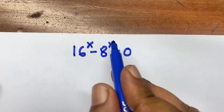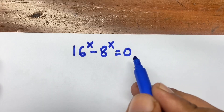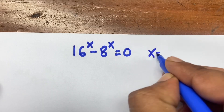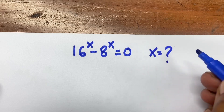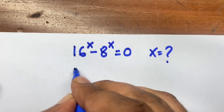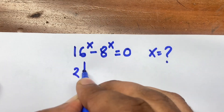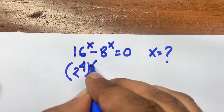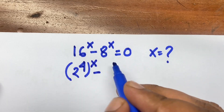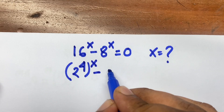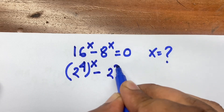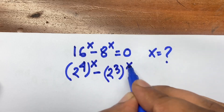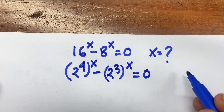How to solve 16 power x minus 8 power x equal to 0? Find x is equal to what? So, 16 is 2 to the power 4, bracket power x, minus 8 is 2 to the power 3, bracket power x, is equal to 0.